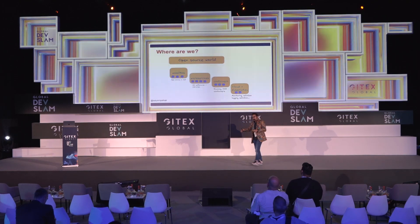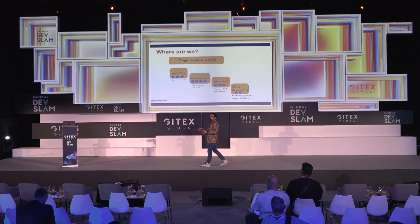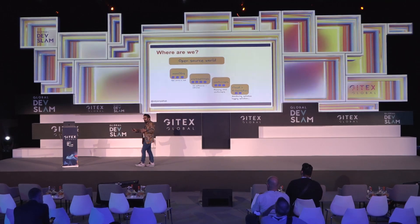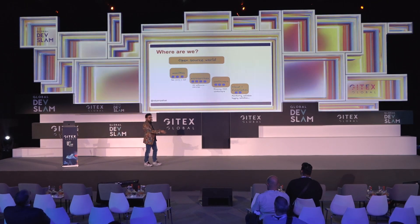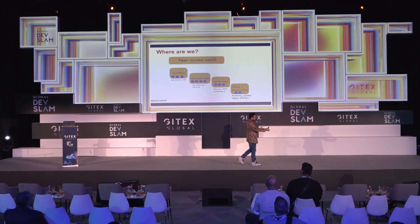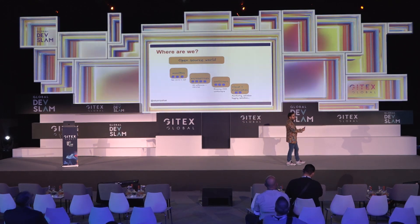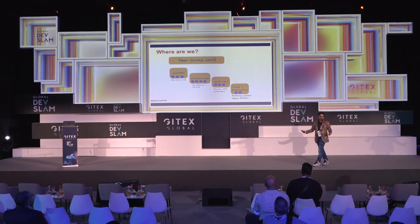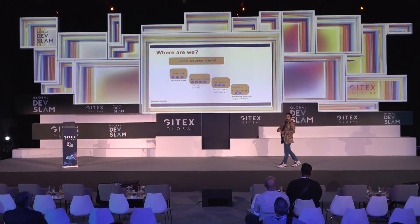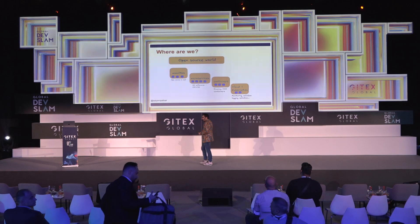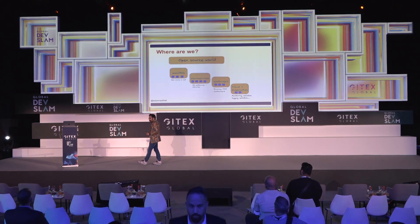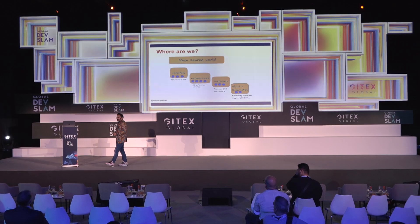Let's first discuss where we are with the current landscape of the open source ecosystem. We have different bunches of software running in different styles. We have monolithic applications running open source software. Then we slowly moved — and many companies are still in the transition of moving towards microservices, where we are still using a lot of open source libraries and a lot of dependencies.